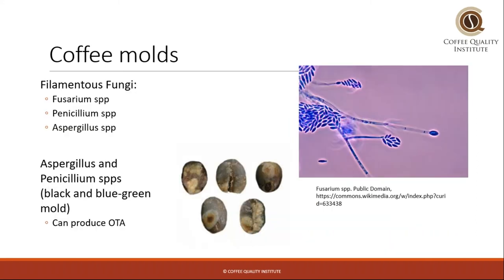For molds, we're talking about a couple of different types of filamentous fungi: Fusarium, Penicillium, and Aspergillus. We know that these coffee molds are responsible for the production of Ochratoxin A, so they're relevant to regulatory and human health considerations in coffee production. All of these types of molds have been shown to also impact cup quality. But you have to remember that you can't always taste if there has been mold on the coffee — it's not always distinguishable as a moldy flavor in the cup.